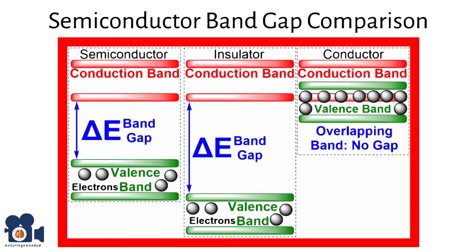Semiconductors have a smaller band gap than insulators but larger than conductors. This band gap is the energy difference between the top of the valence band and the bottom of the conduction band. Its size determines the electrical properties of the material by influencing how easily electrons can be excited from the valence band to the conduction band, and thus how well the material can conduct electricity.